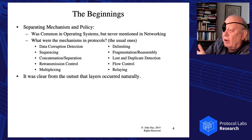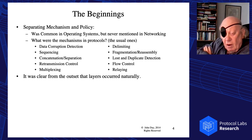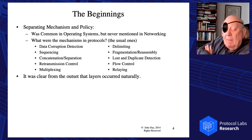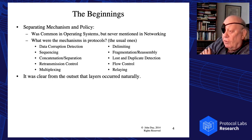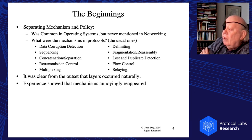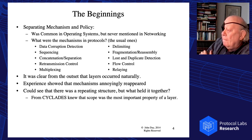It was clear from the outset that layers occurred naturally in networks. Everyone pretty much agrees that Dijkstra came up with the idea of layering an operating system in 1968, and we started the net in 1969 — that paper had really captured our imaginations. Using layers had become quite natural to the problem because we were doing OS stuff, but also just because the problem actually calls for layers. Experience showed that mechanisms kept reappearing. Dijkstra said they shouldn't, but they kept doing it.